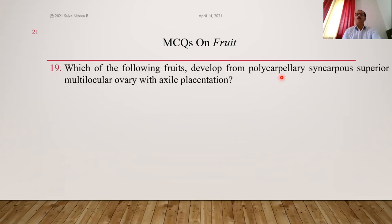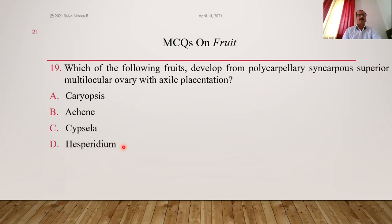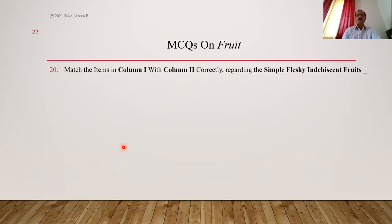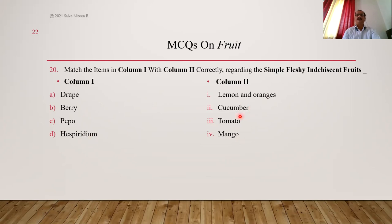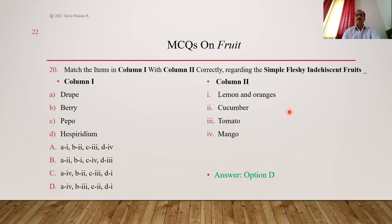Which fruit develops from polycarpellary syncarpous superior ovary with axial placentation? That fruit is hesperidium — examples are lemon and oranges. Pepo is a false fruit developing from inferior ovary — examples: cucumber, cucurbita. Matching fleshy fruits: drupe — mango, bear, coconut; berry — tomato, guava; pepo — cucumber, cucurbita; hesperidium — lemon, oranges. Answer is D, hesperidium. Correct matching is option D.